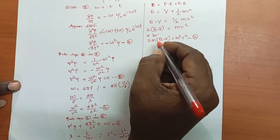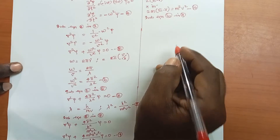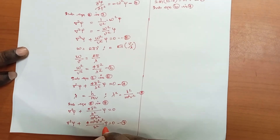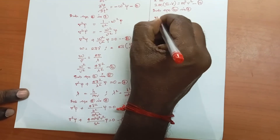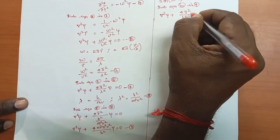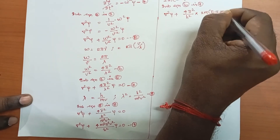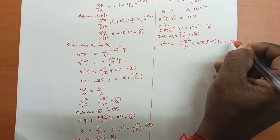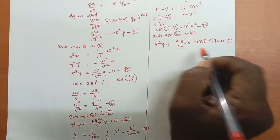Substituting equation 10 into equation 9, replacing m²v² with 2m(E − V): ∇²ψ + (4π²/h²) · 2m(E − V)ψ = 0. This is equation number 11, which is the Schrödinger time independent wave equation.